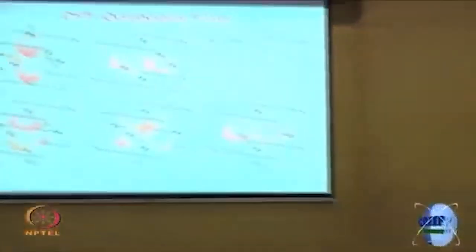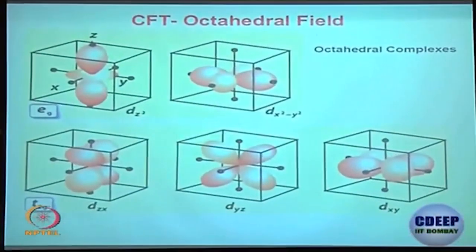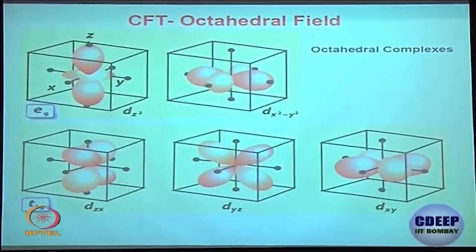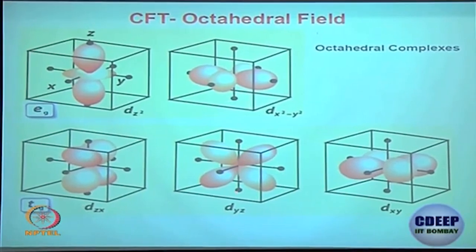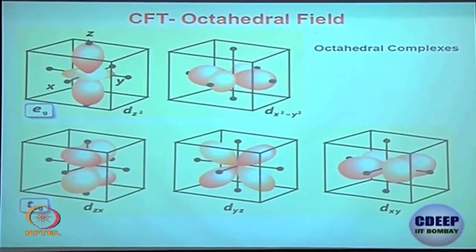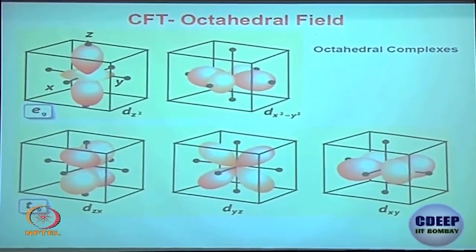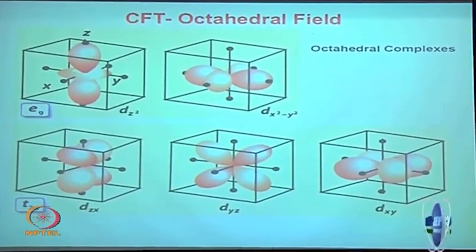This is the same concept shown in a different diagram. The black balls are the ligands and the d-orbitals of the metal are clearly shown. Whatever representation fits you best, use it — it gives a very clear idea.